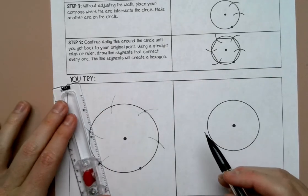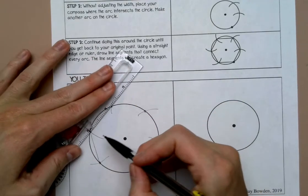And then I'm going to connect all of those intersections with a straight edge or a ruler.